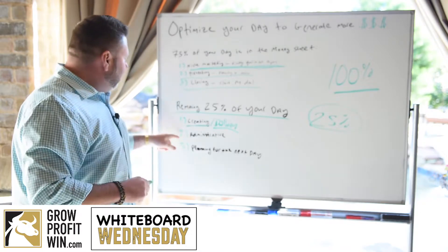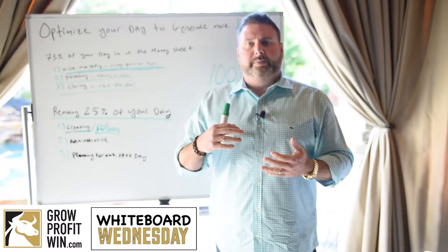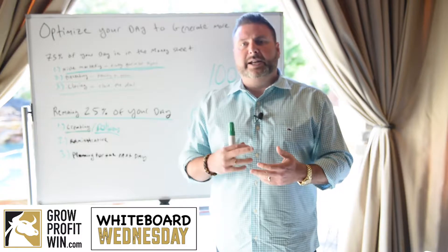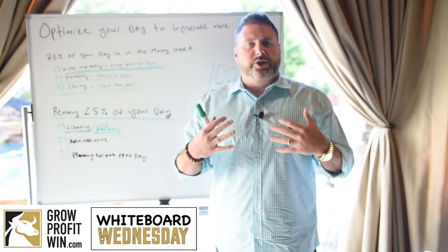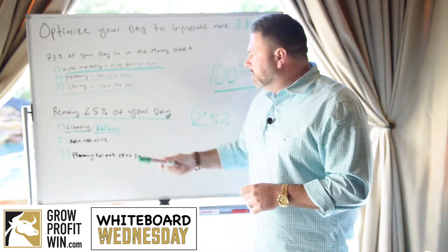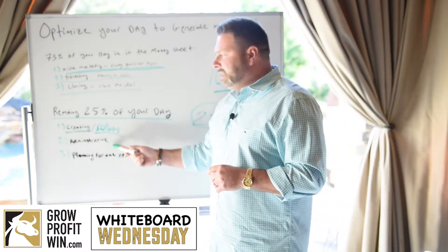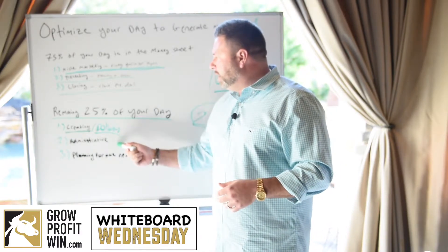The second piece of the 25 percent is administrative. Unfortunately, we have to do things like interviewing people, taking certain calls, meeting with your accountant — activities that are just part of running a business day-to-day. Prioritize that bucket: don't just take a meeting to take a meeting — make sure it's productive and moving the ball forward.